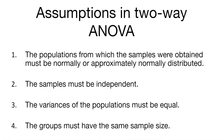It's always important to revisit the assumptions of the two-way ANOVA. First, the populations from which samples were taken must be normally or approximately normally distributed — if not, we can transform the data as we learned in regression. Second, the samples must be independent. Third, the variances of the populations must be equal. Fourth, the groups must have the same sample size. Keep these four assumptions in mind, especially the interaction effect, when conducting a two-way analysis of variance.